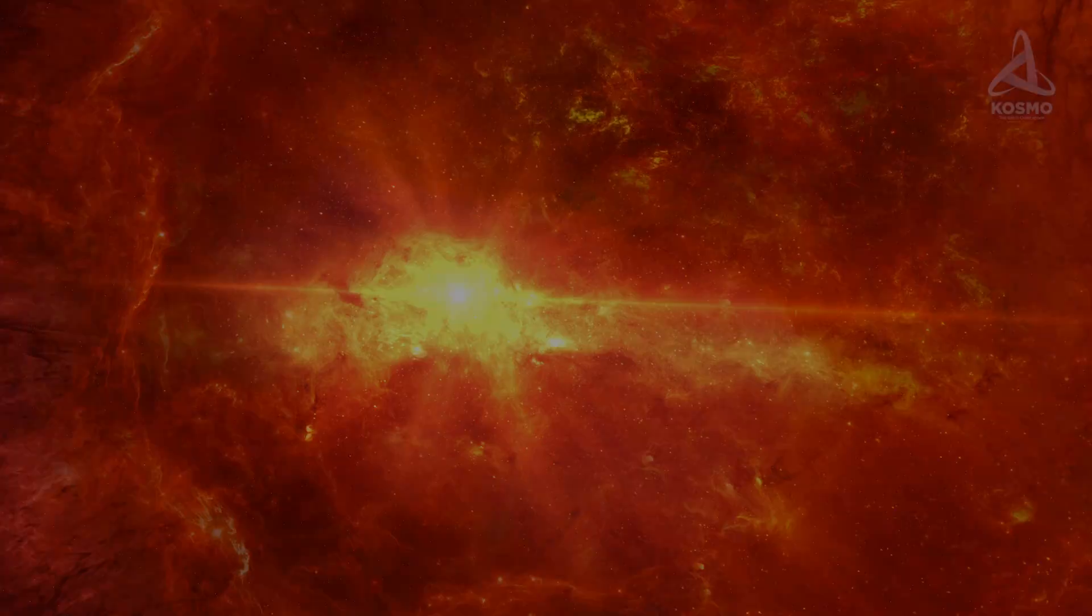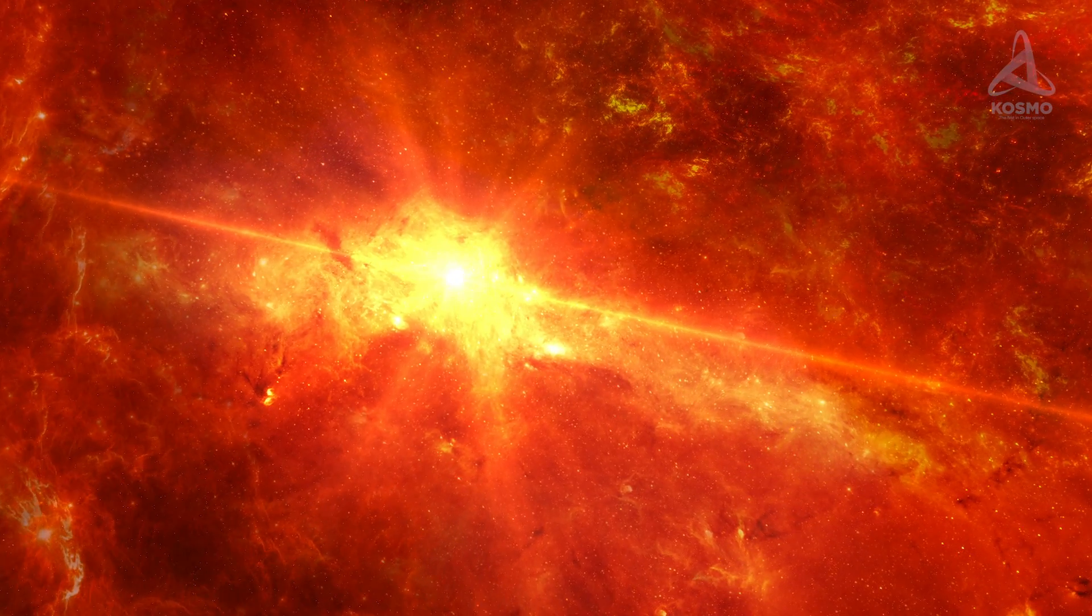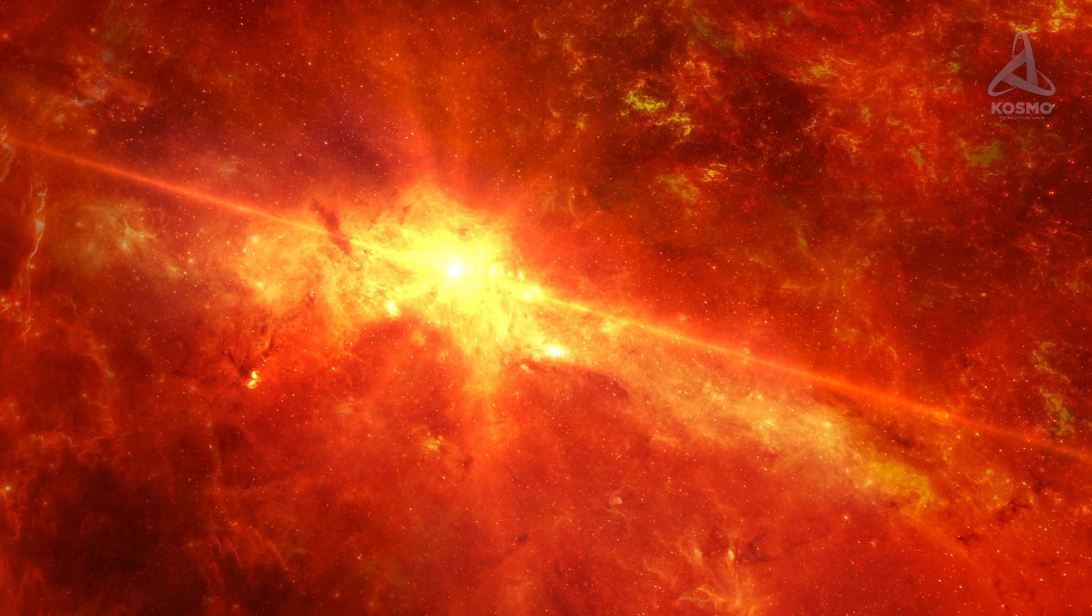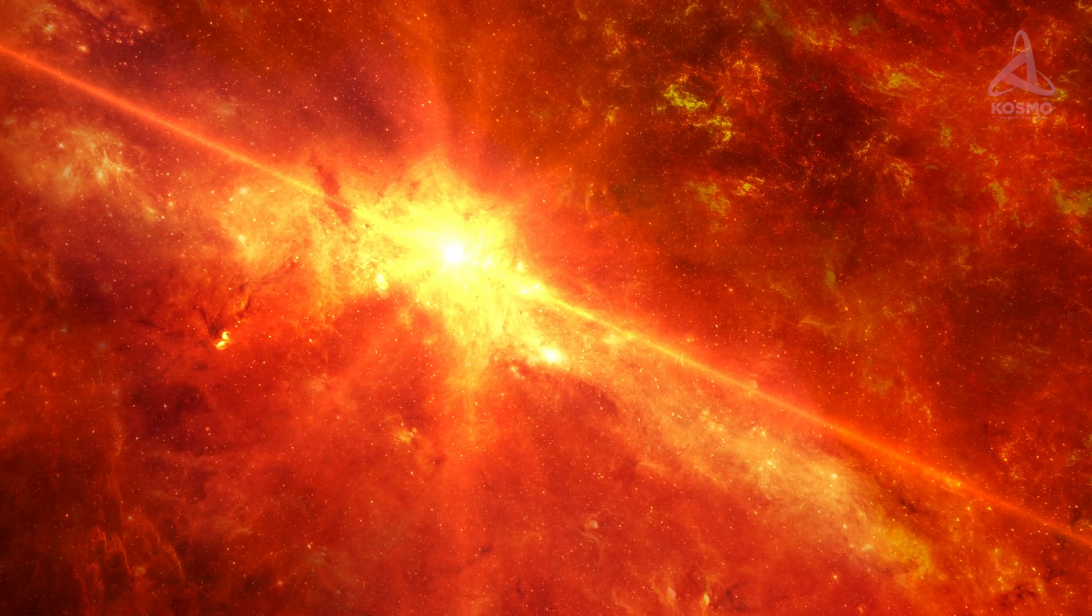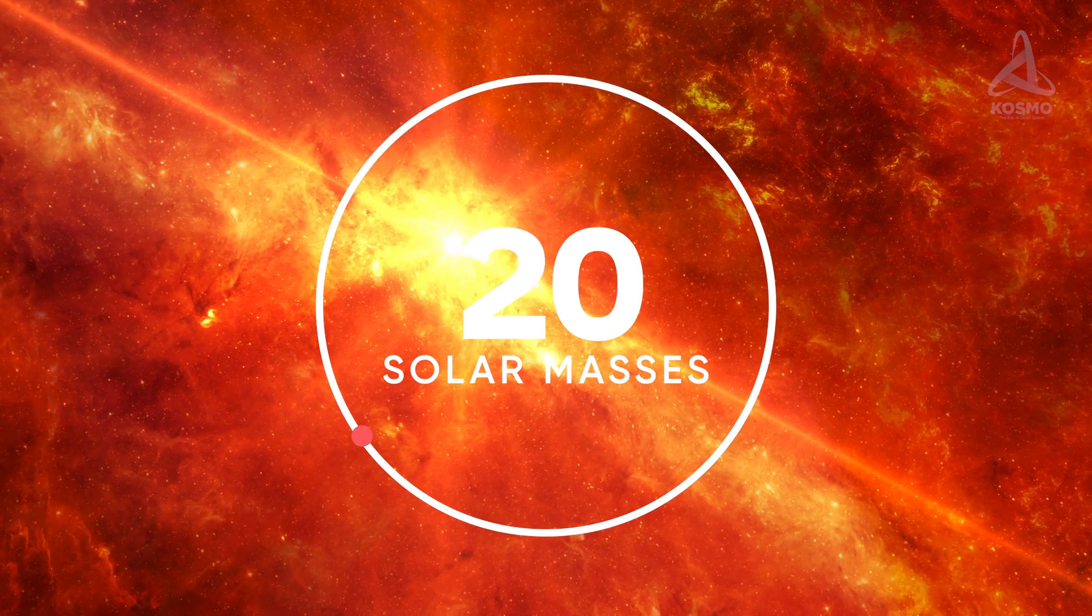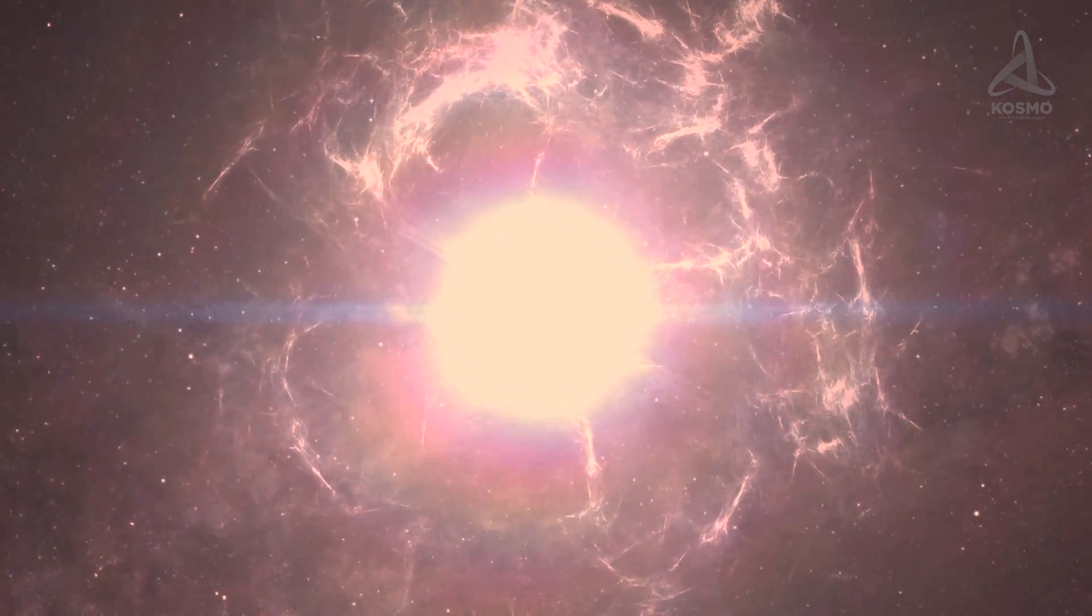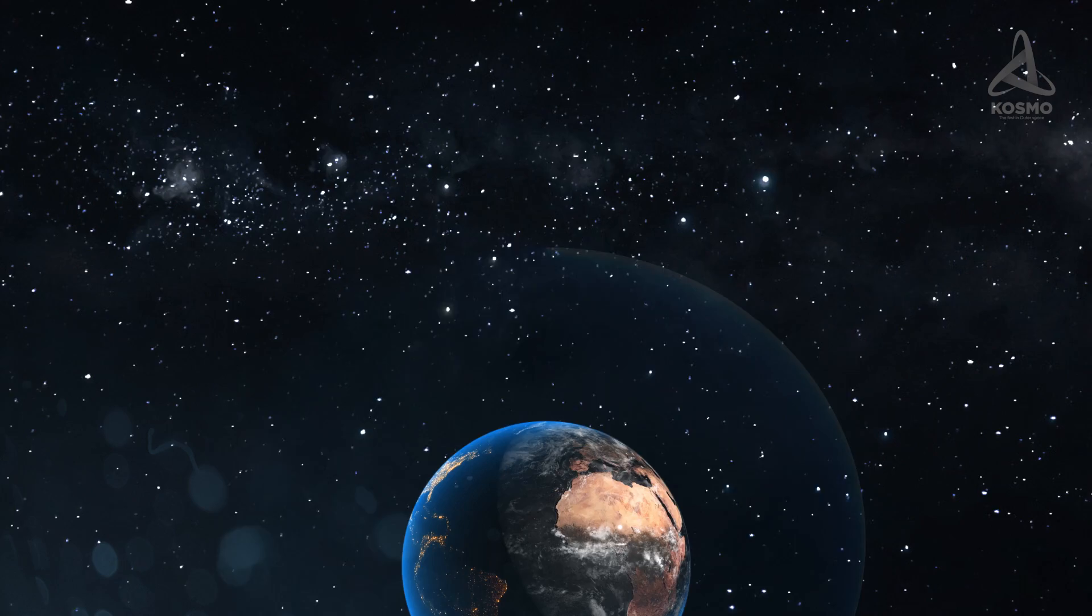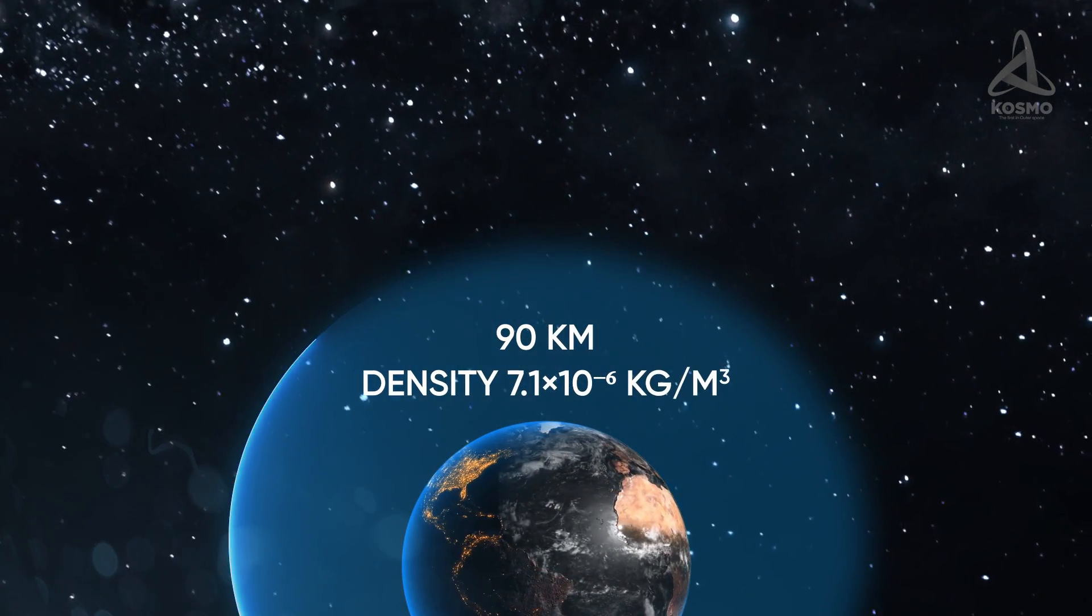The mass of Stevenson 2-18 still remains to be gauged. However, supposing its inner makeup is similar to that of UY Scuti and other supergiants, it should be anything within 20 solar masses. If it is the case, the average density of supergiants like that must be extremely low, and almost equal to the density of the Earth's atmosphere at a height of about 90 km above sea level.